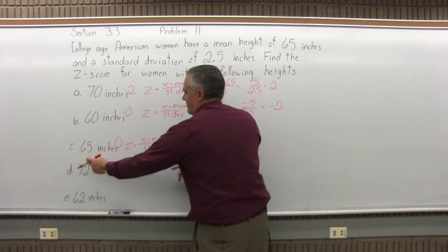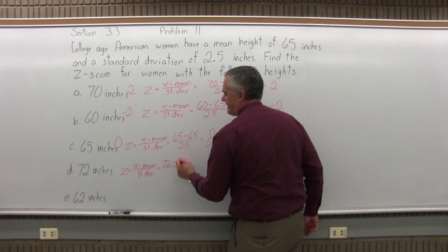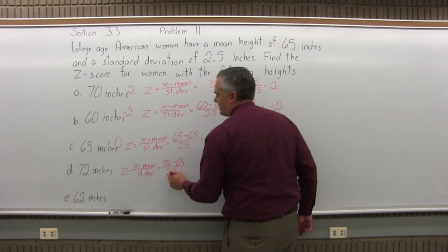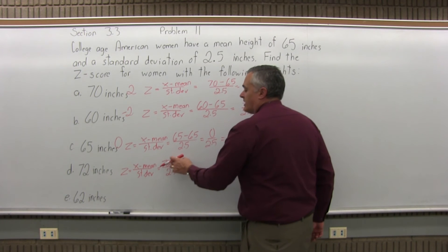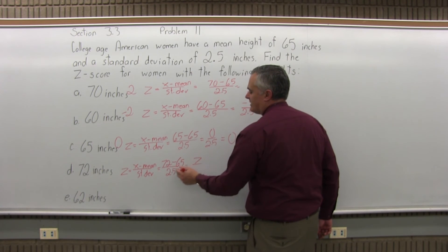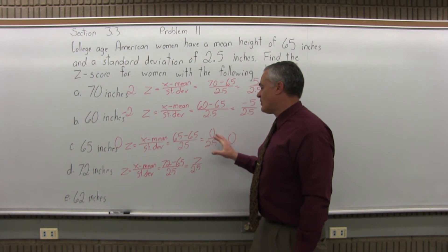The value of x is 72. Minus the mean is 65. Standard deviation is 2.5. Now in the numerator, when you subtract, 72 minus 65 is 7 over 2.5.